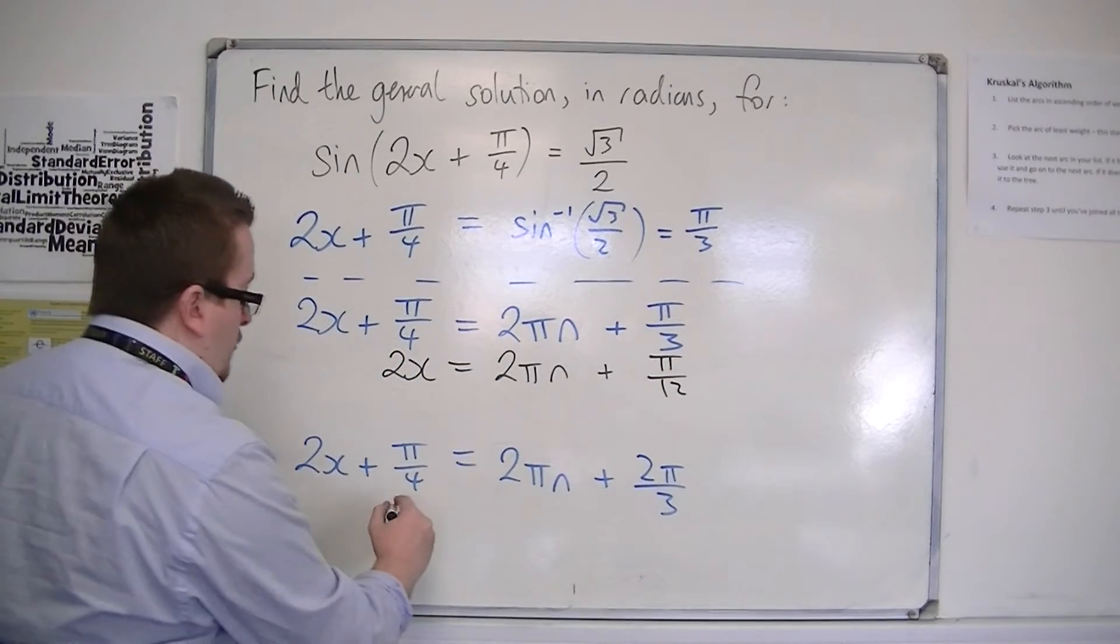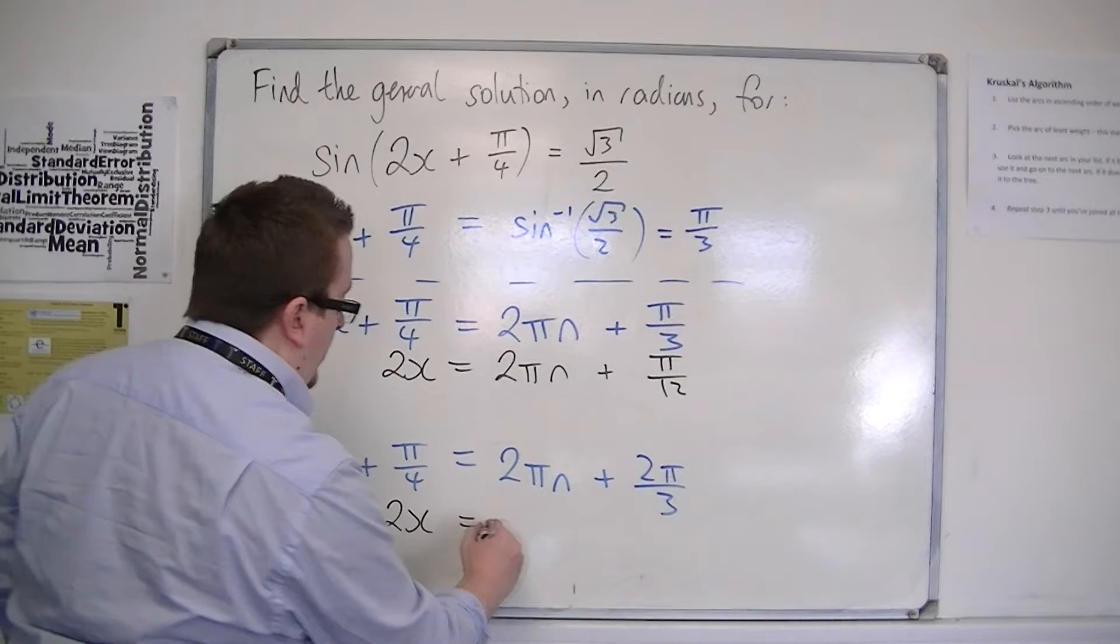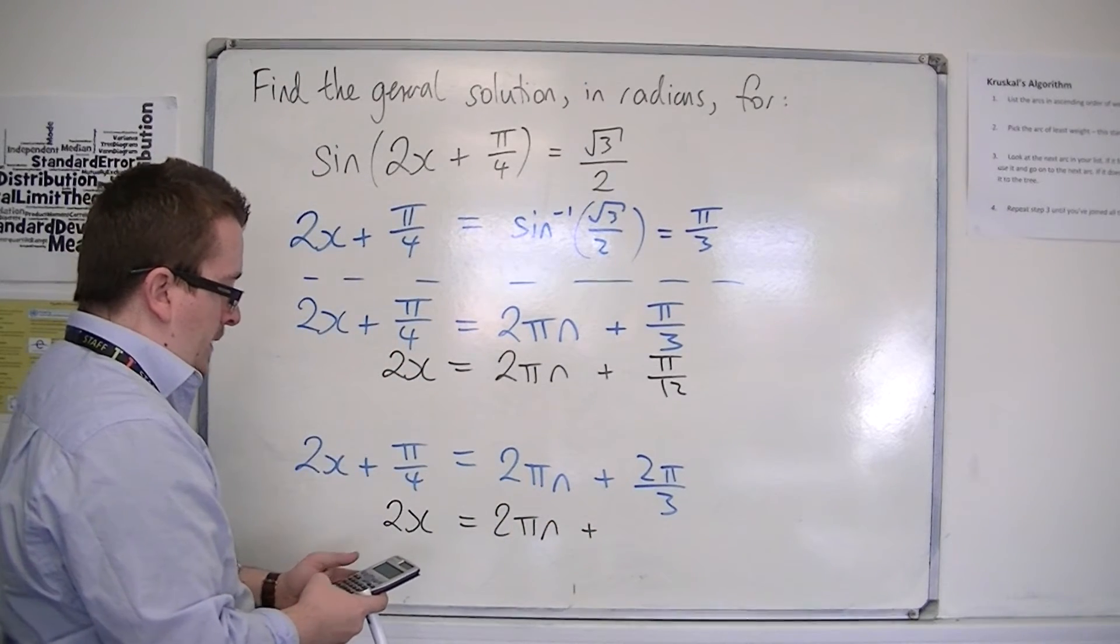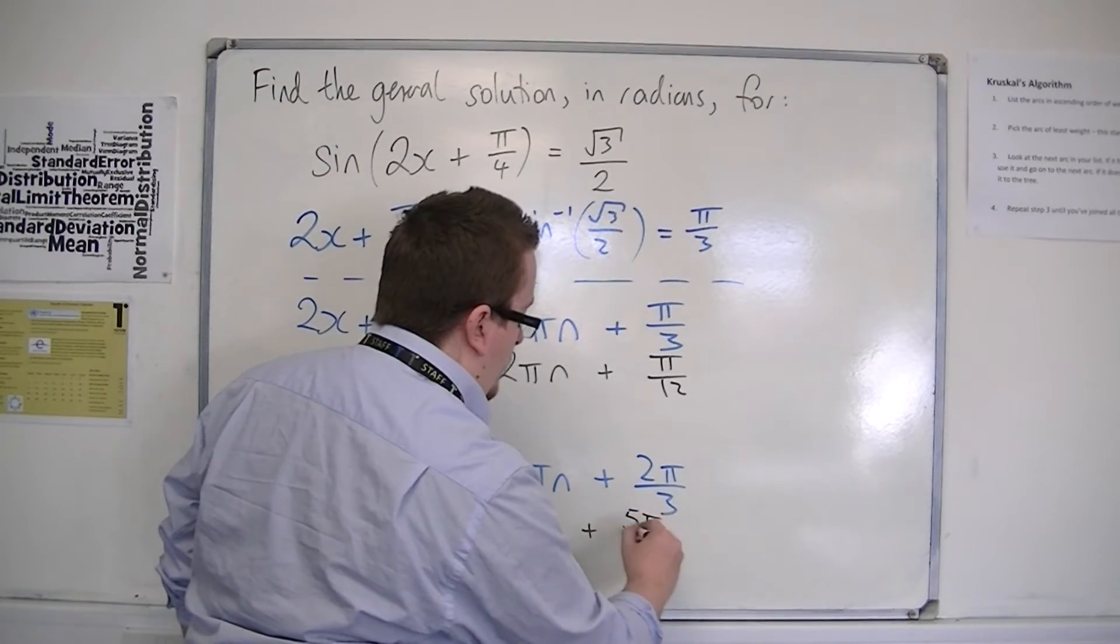If I take π/4 from both sides here, I'm going to have 2x = 2πn. Then I've got 2/3 take away 1/4, which is 5/12, so that's 5π/12.